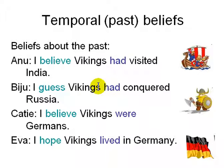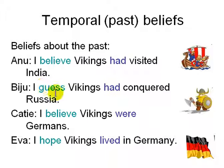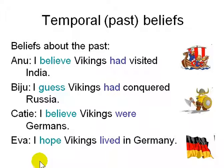Let's look at some more examples — belief about the past. Anu: 'I believe Vikings had visited India' — belief is about the past, and she doesn't know, she believes. Biju: 'I guess Vikings had conquered Russia' — he's not really sure but thinks so. Katie: 'I believe Vikings were Germans' — belief in the present tense about the past. Eva: 'I hope Vikings lived in Germany' — a hope about the past.